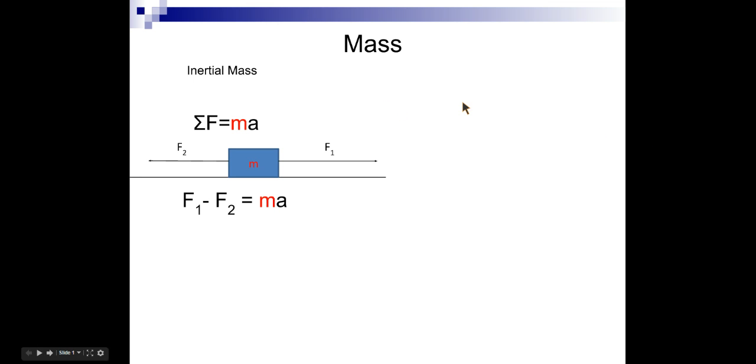All right, so we're going to look at two types of mass. First is the inertial mass. And the inertial mass is the mass that we use in Newton's second law. It's the mass that follows or obeys Newton's second law.